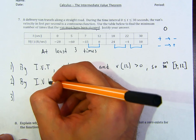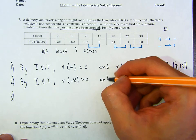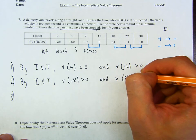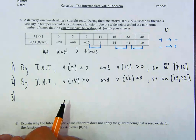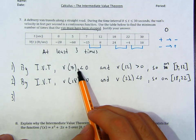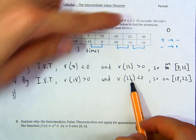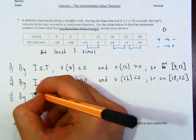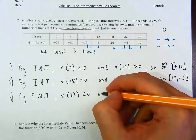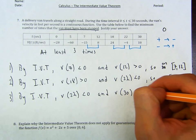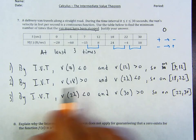By IVT, V of 18 is greater than 0 and V of 22 is less than 0, so on the interval from 18 to 22, the van must have stopped — this goes from positive to negative. And by IVT, V of 22 is less than 0 and V of 30 is greater than 0, so on the interval from 22 to 30, the van must have also stopped.